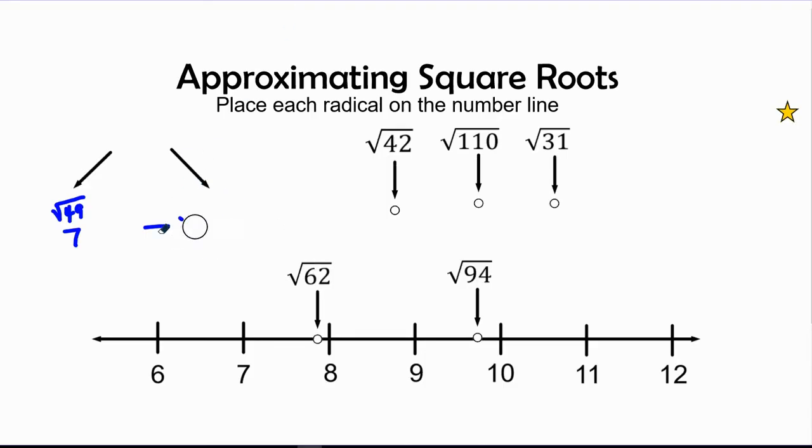Now let's pick up the next one, radical 42. We ask ourselves, radical 42, 6 times 6 is 36, and 7 times 7 is 49. So I forgot to put the 6 right here and 7. We know it's gonna be between 6 and 7.